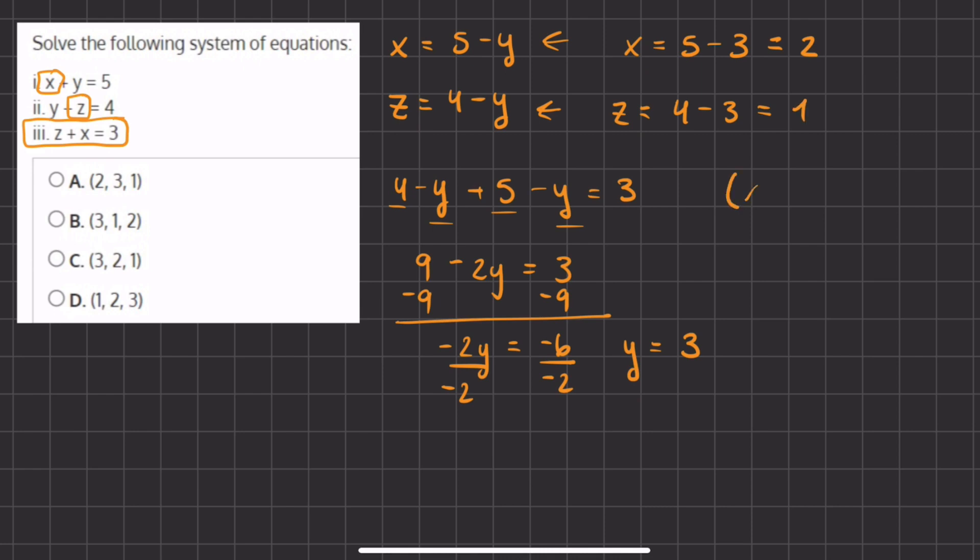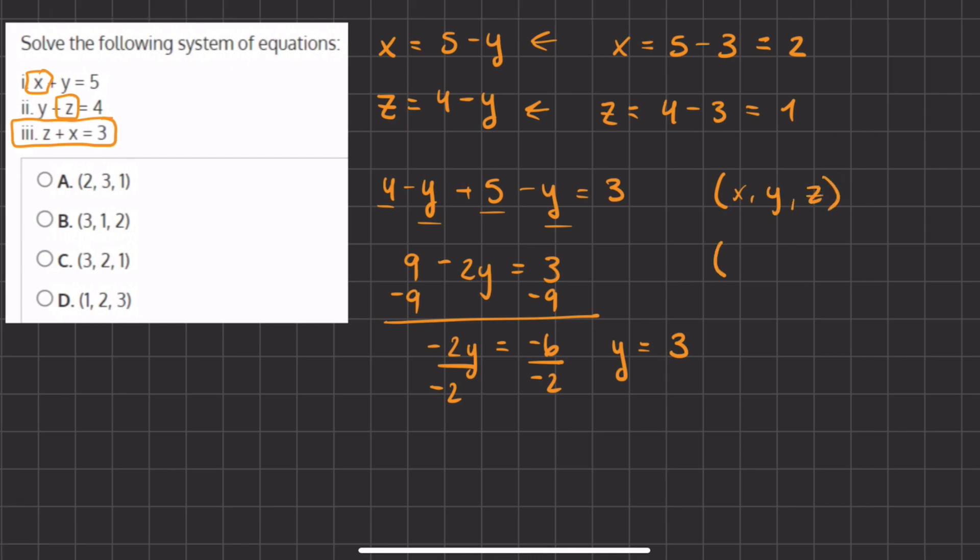So the value of our x, y, and z: we have x which is 2, y which is 3, and z which is 1. So these are our values for our variables, and these values correspond with answer A.